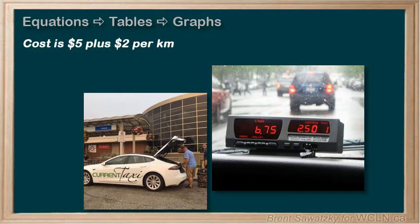So we start by making an equation from this information. The variable is the number of kilometers traveled. Let's call that d. So our cost, c, is represented by c equals 2d plus 5.